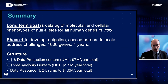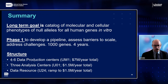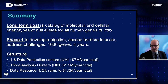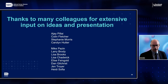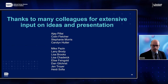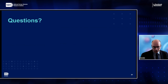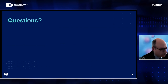In summary, the long-term goal is a catalog of molecular and cellular phenotypes of null alleles for all human genes in vitro. Phase one would develop a pipeline, assess barriers to scale, address challenges, and would entail one thousand genes over four years. The structure is four to six data production centers, three analysis centers, and a data resource. I want to thank my many colleagues for extensive input on ideas and the presentation. Now we're on to questions. I've asked Dr. Chung, Dr. Eideker, and Dr. Chang to lead off the discussion.